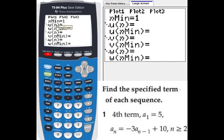For the calculator, u sub n we use u parentheses n parentheses to represent that. u sub n will be the same as a sub n. So from the question we know a sub n equals negative 3 times a sub n minus 1 plus 10. So we can put negative 3 times u sub n minus 1.